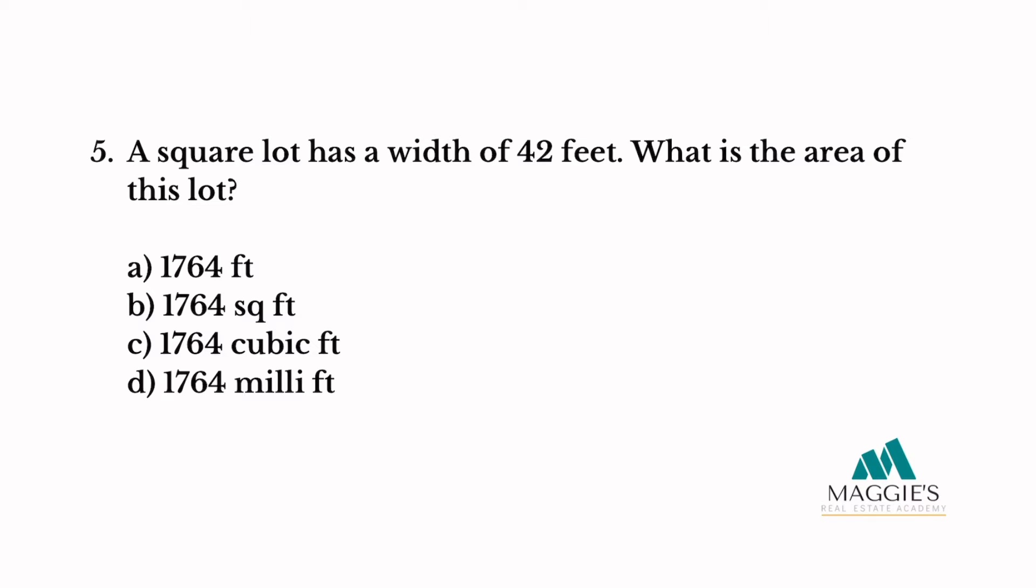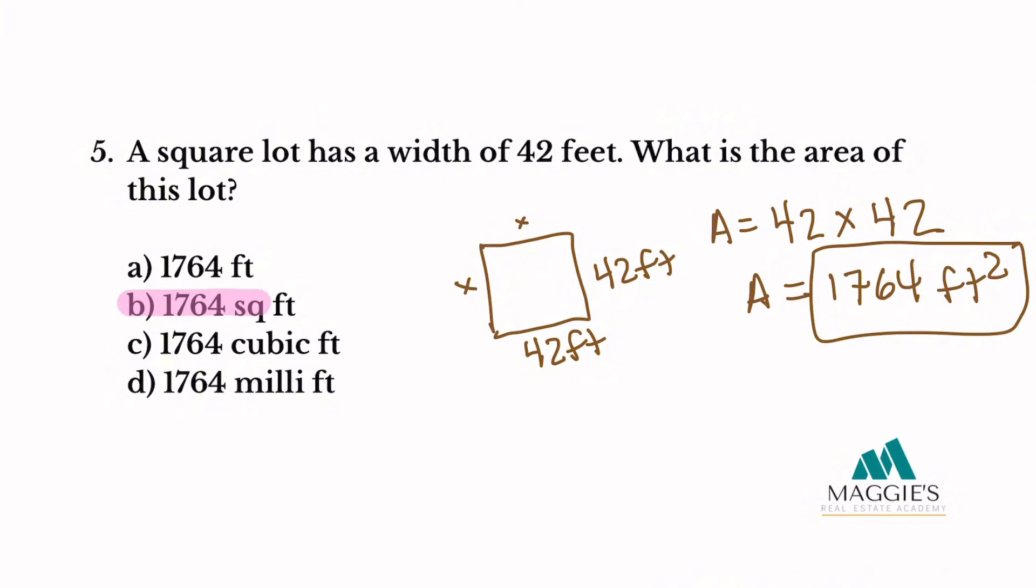Number five: A square lot has a width of 42 feet. What is the area of this lot? Remember, since this is a square, all sides are equal. So if this is 42 feet, that means this is going to be 42 feet and this one and this one as well. So since we only need two sides to calculate the area of a rectangle or square, here I'm just going to say area equals 42 times 42. So my total area for this square lot equals 1,764 square feet or feet squared. So my answer to this one is B.